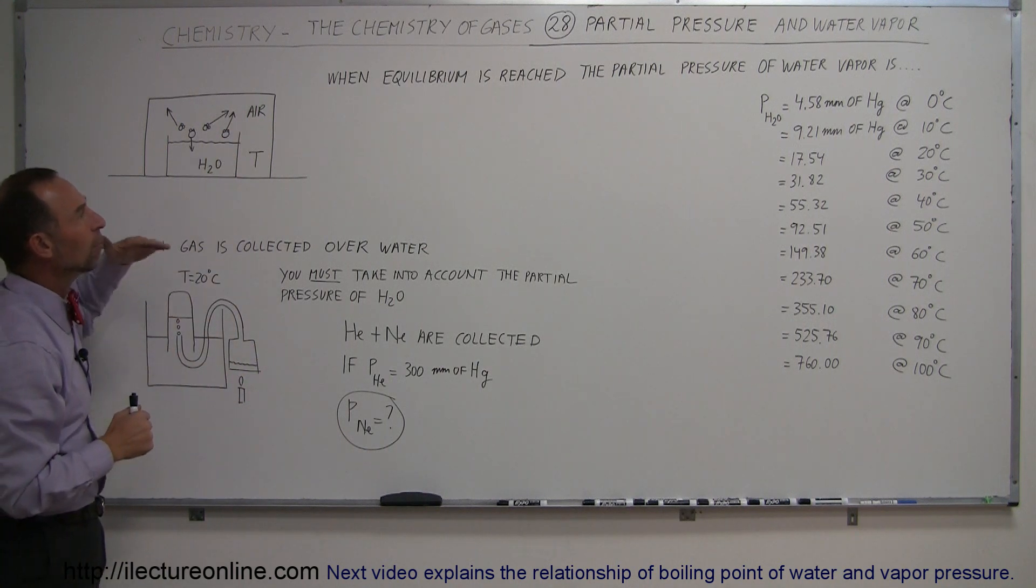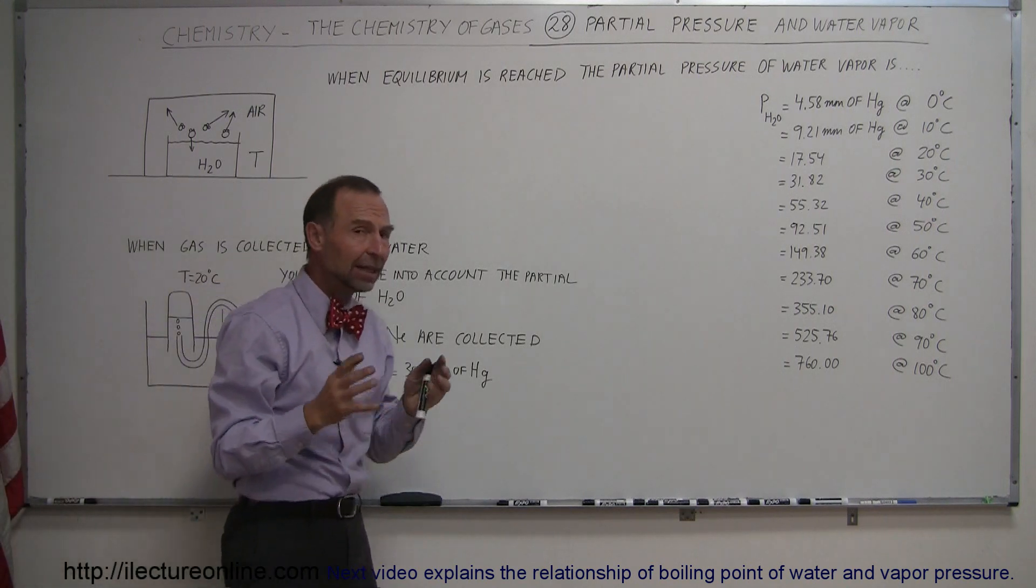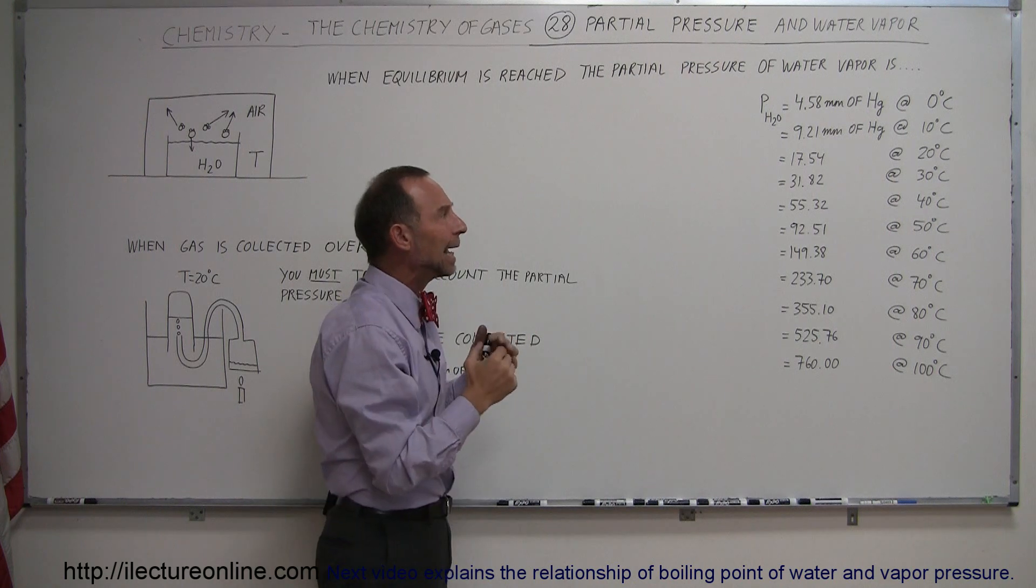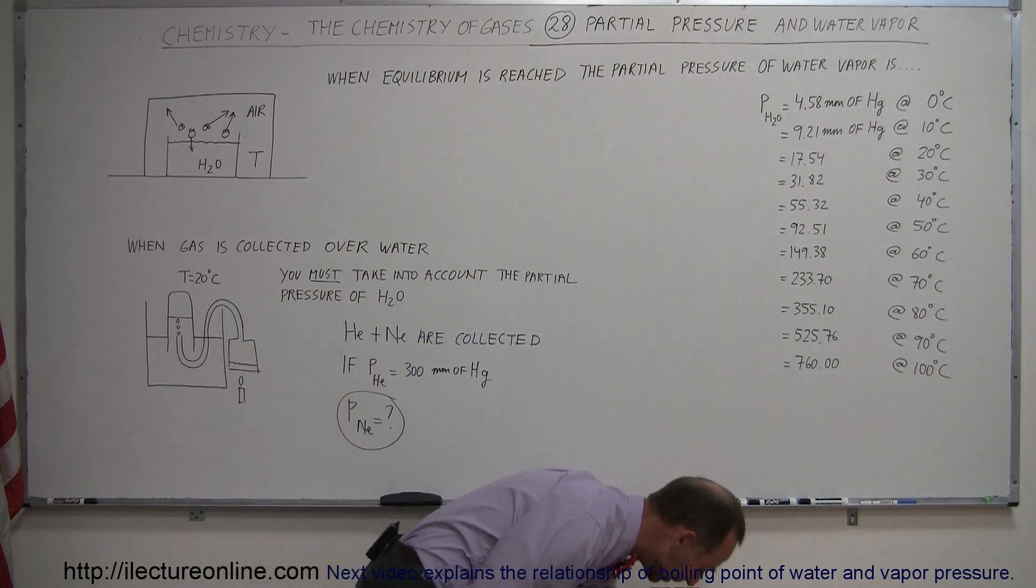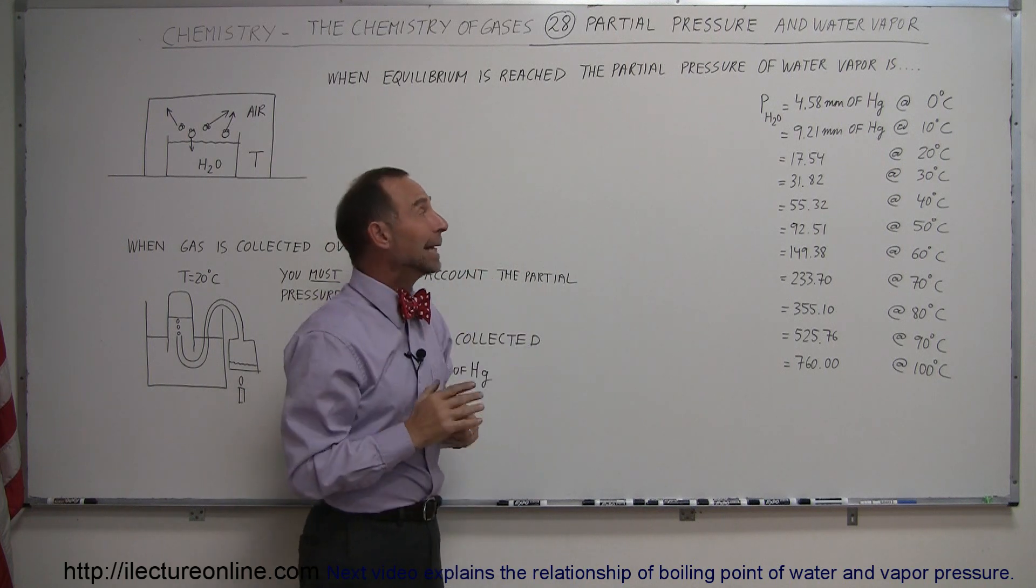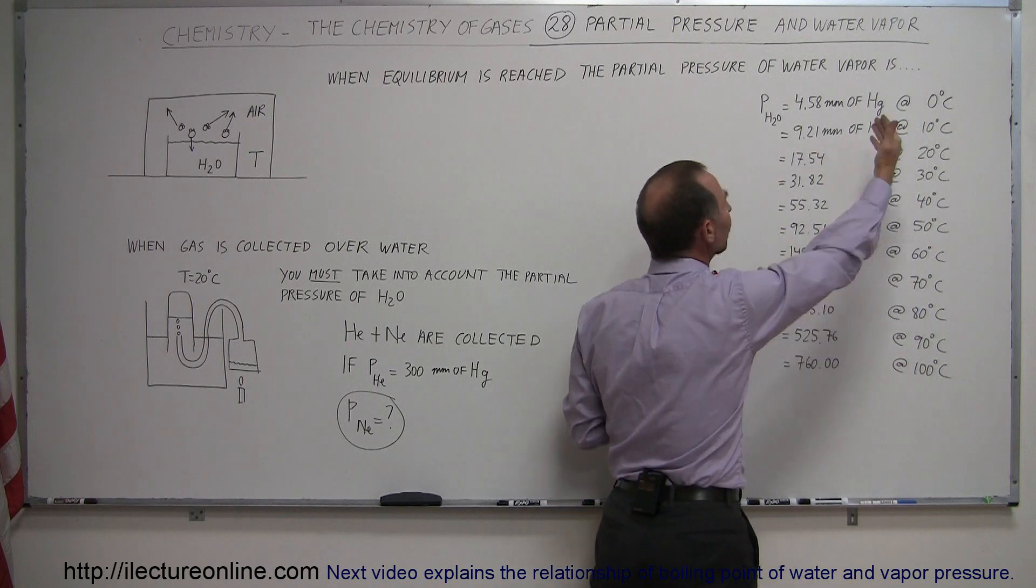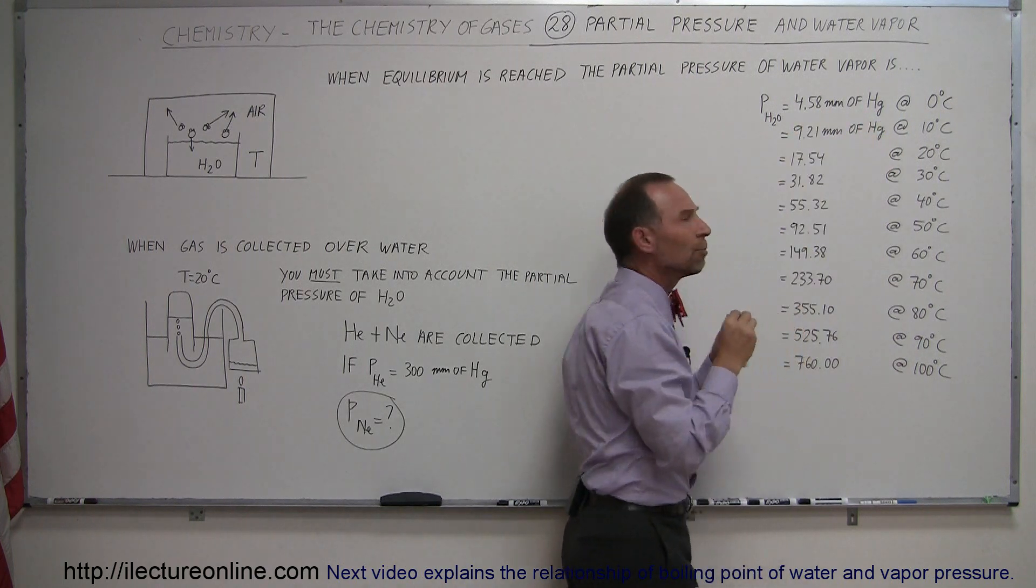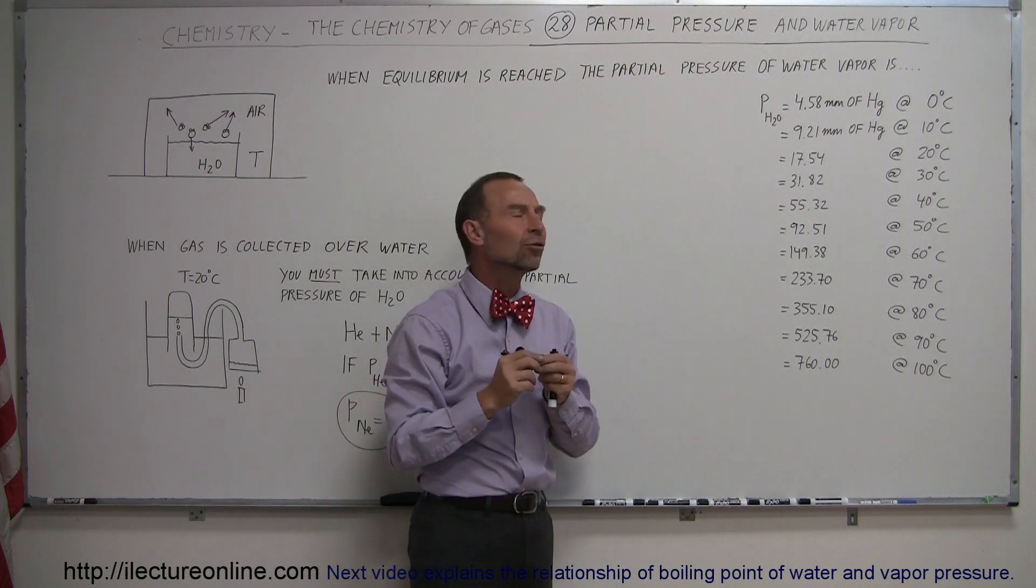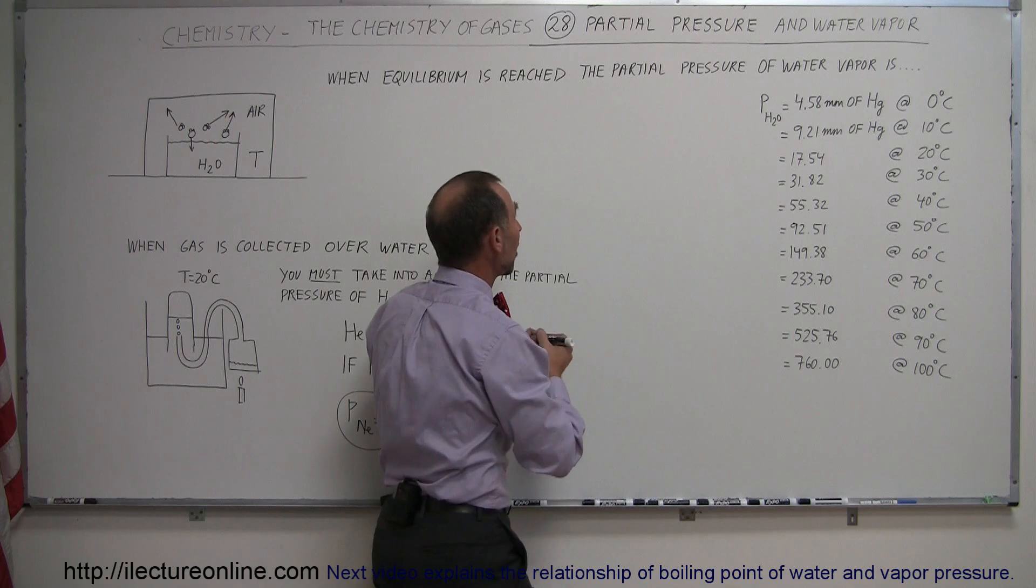We have now reached what we call the partial pressure of water vapor. If you measure the partial pressure of the various constituents in the air, you'll find out that part of that pressure is due to the water vapor in the air. At zero degrees centigrade, if the air is fully saturated, the partial pressure of the moisture or the water vapor in the air will be 4.58 millimeters of mercury, which is a very small percentage of the total pressure, let's say on one atmosphere.